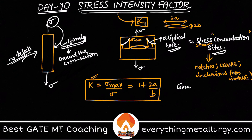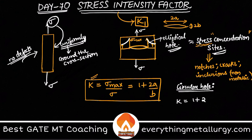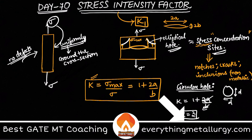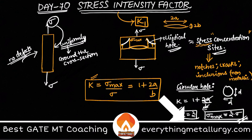Now let's consider a circular hole or circular crack. K will be equal to 1 plus 2 times a divided by b, but for a circle the major axis and minor axis are both equal — they are both the diameter — so a equals b. Therefore K equals 3 for a circular hole. That means sigma-max, the stress concentration at any point on the circumference, will be three times the applied stress sigma.